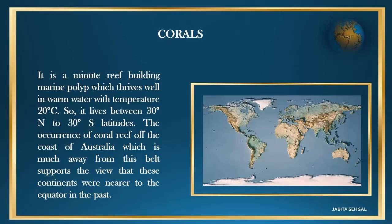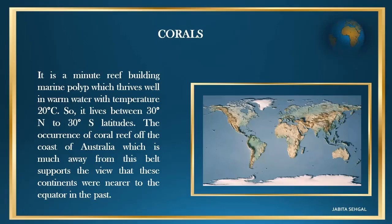Wegener was still not satisfied with his collection of evidence, so he went to Greenland with his team for his next expedition to collect more evidence. Sadly, in November 1930, he was caught in a snow blizzard, which became the reason for his death. It is estimated that his body and his diary now lie under more than 100 meters of accumulated ice and snow.